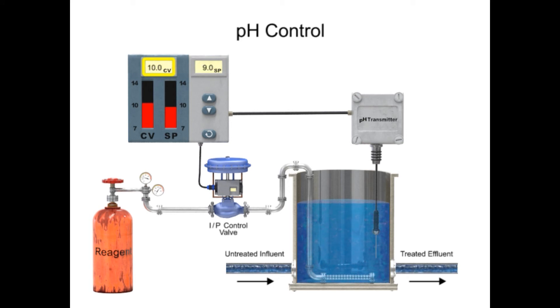If the values are not equal, the controller sends a signal to the control valve that applies carbon dioxide to the tank. The reagent is applied to the tank at varying rates to precisely control the pH level.